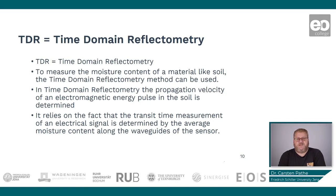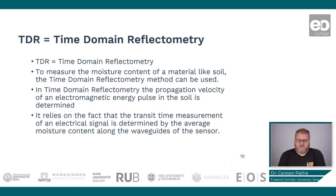TDR stands for Time Domain Reflectometry. This can be used for measuring moisture content of natural media like soils. It is basically relying on the measurement of the propagation velocity of an electromagnetic energy pulse in the soil, and it relies on the fact that the transit time measurement of an electric signal is determined by the average moisture constant along the so-called waveguides of the sensor.